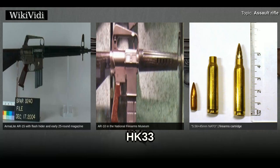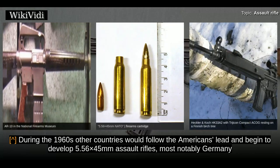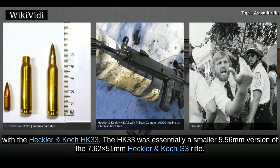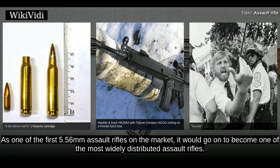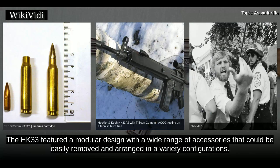HK-33: During the 1960s, other countries would follow the Americans' lead and begin to develop 5.56×45mm assault rifles, most notably Germany with the Heckler and Koch HK-33. The HK-33 was essentially a smaller 5.56mm version of the 7.62×51mm Heckler and Koch G3 rifle. As one of the first 5.56mm assault rifles on the market, it would go on to become one of the most widely distributed assault rifles. The HK-33 featured a modular design with a wide range of accessories that could be easily removed and arranged in a variety of configurations.